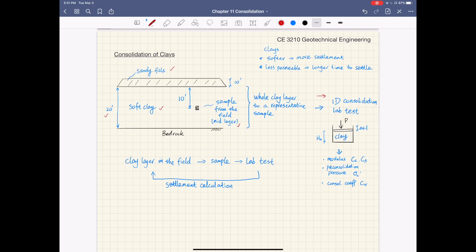And then we're going to put this sample in the lab to conduct what we call 1D consolidation lab test. In this lab test, we're going to put some load on the clay sample and then study how this clay deforms in response to your applied load. The results of the 1D consolidation test provide some key information we need for settlement calculation, including modulus, preconsolidation pressure, and consolidation coefficient.